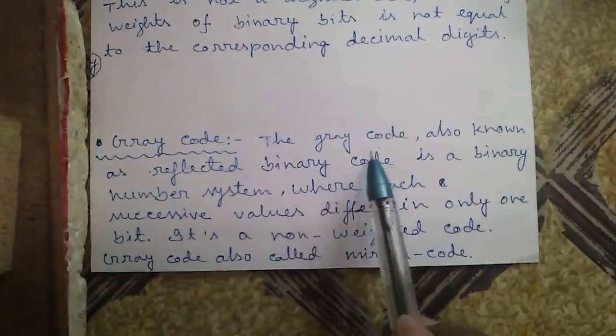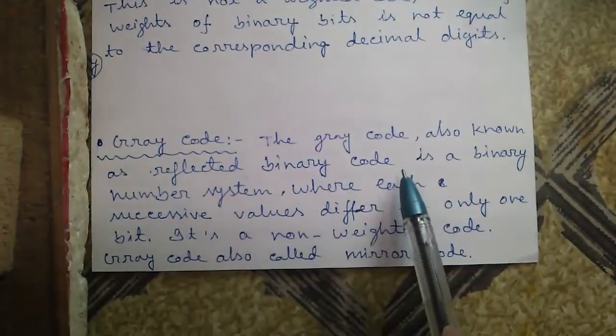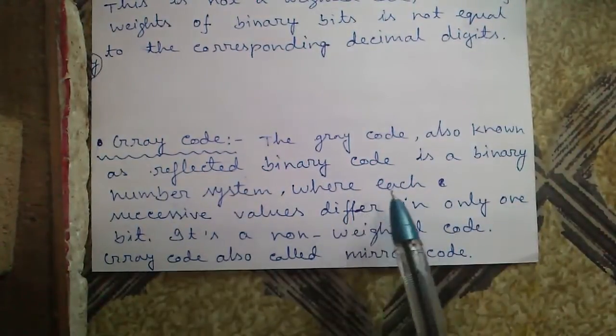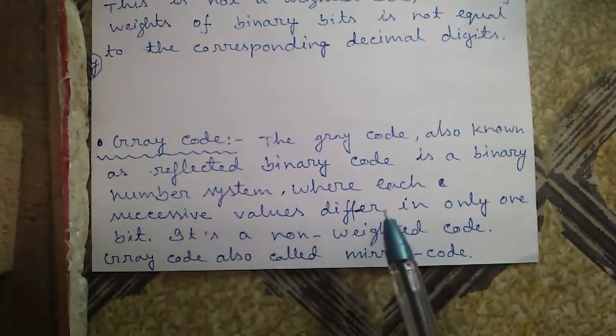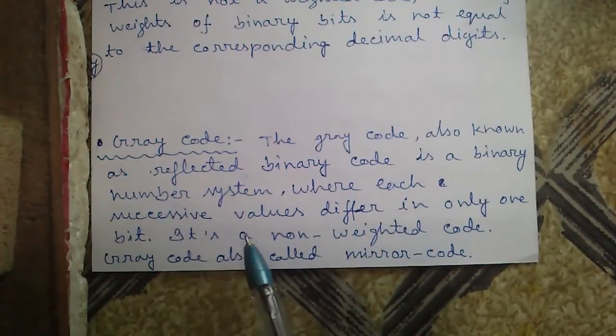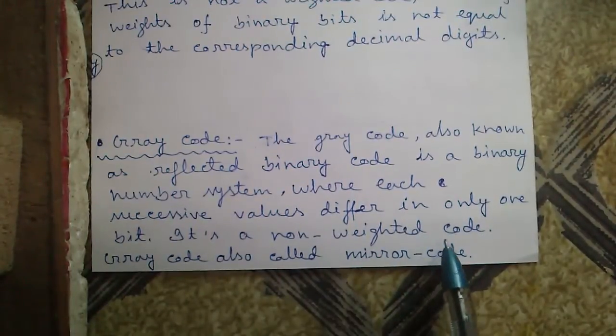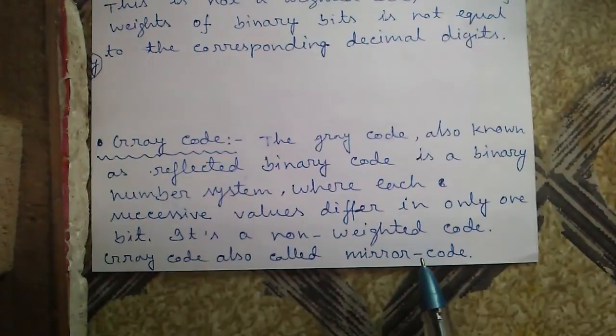Gray code. The gray code, also known as reflected binary code, is a binary number system where each successive values differ in only one bit. That is, a non-weighted code. Gray code is also called mirror code.